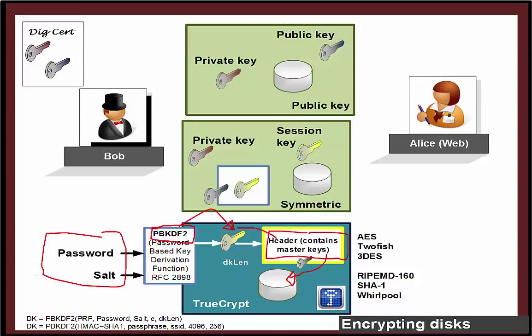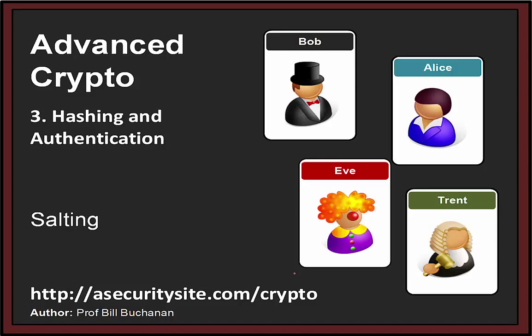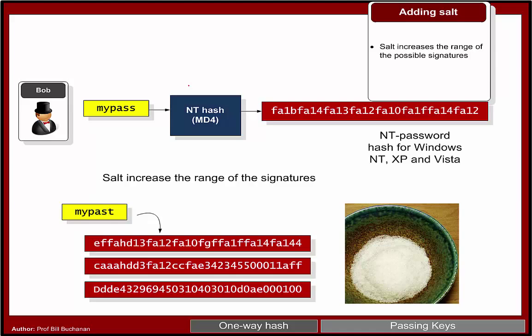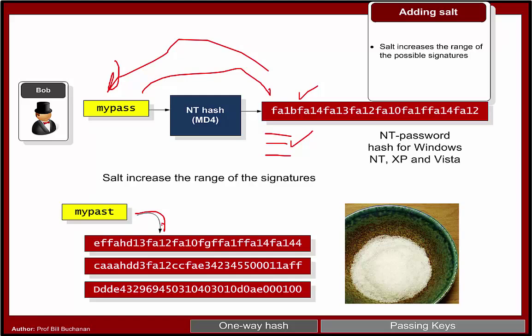A key concept with hashing is the ability to salt the signature we produce. The problem with hashing is that it's possible to create a rainbow table or a dictionary attack and find out the hash value that relates to a certain data value. With salt, we add a little bit extra into the process of producing our hash to make sure we can produce many different hashed values.